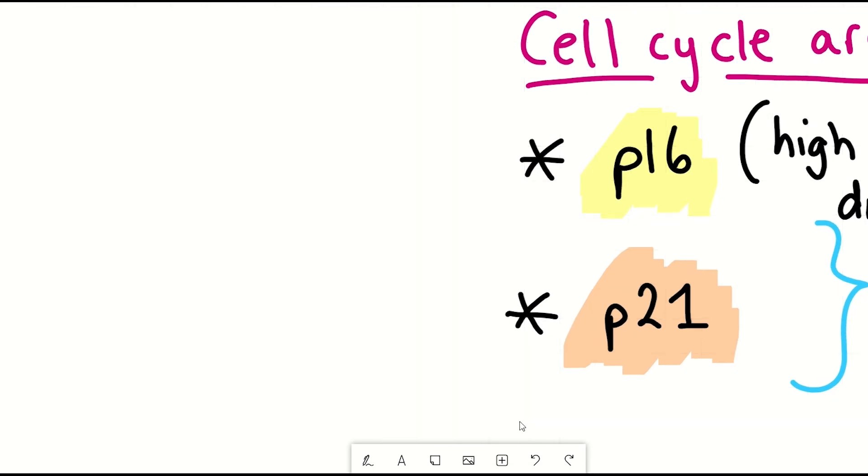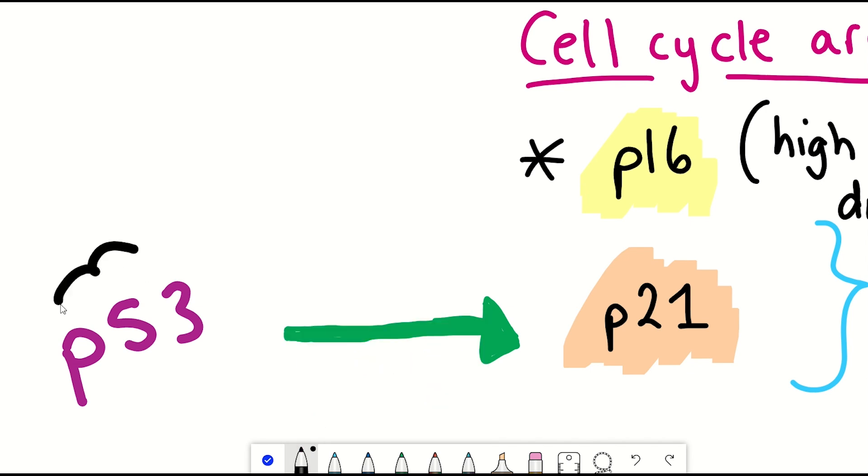P21 is famously regulated by the world's coolest protein, that is, P53. Fun fact, I submitted with my lab leader, Masashi, a review in P53 in senescence this week, so I'll let you know if and when it gets published. But anyway, P21 is involved in the cell cycle arrest feature of senescence.